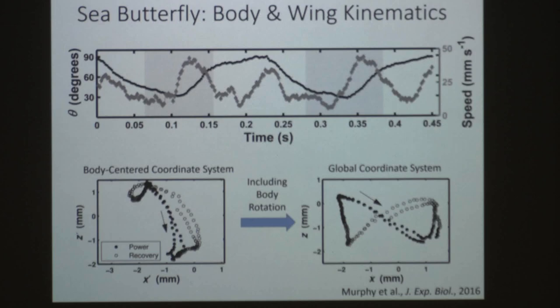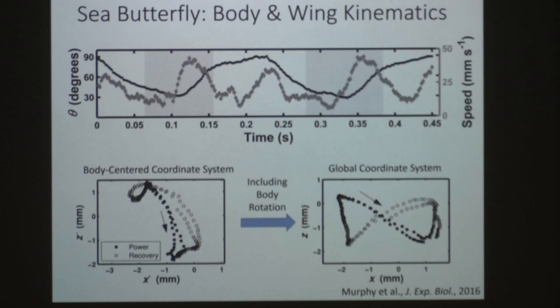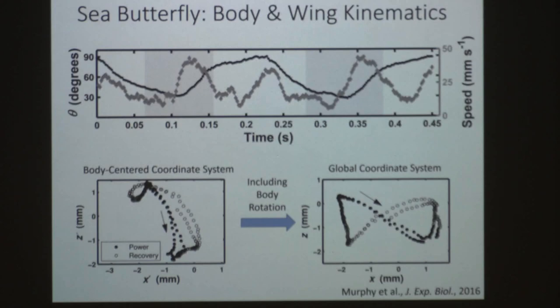Extracting body and wing kinematics, with time on the x-axis, body angle in degrees on the left y-axis (black), and animal speed on the right y-axis (gray diamonds): during the power stroke the animal moves quickly, with another speed peak during the recovery stroke. Throughout both strokes there is enormous body rotation — from about 90 degrees down to about 30 degrees, i.e., 60 degrees of pitching back and forth. We couldn't find another animal that pitches this much under normal locomotion, so we're calling this hyper-pitching. That hyper-pitching also affects how the wings generate lift.